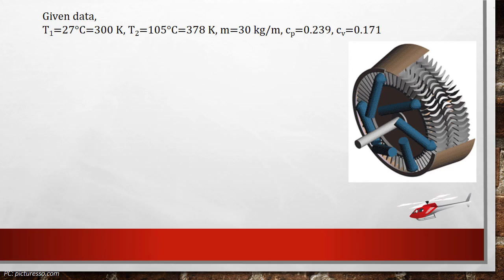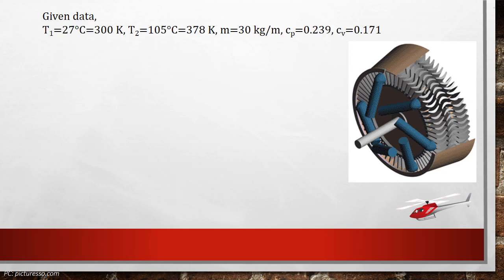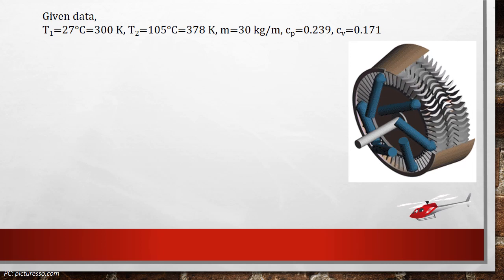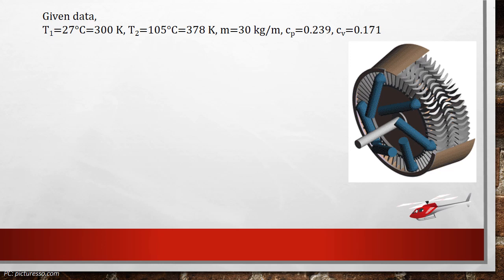Here we consider the centrifugal compressor. Let me write the given data as: Inlet temperature of air at compressor T1 is equal to 27 degrees Celsius or 300 Kelvin, and exit temperature T2 is equal to 105 degrees Celsius or 378 Kelvin, and mass flow per minute m is equal to 30 kg, and specific heat at constant pressure C_P is equal to 0.239, and specific heat at constant volume C_V is equal to 0.171.